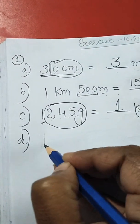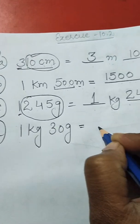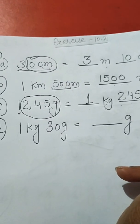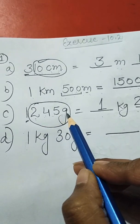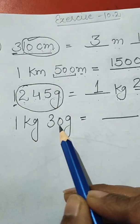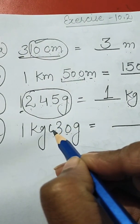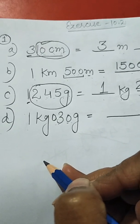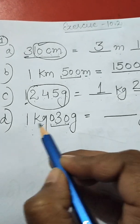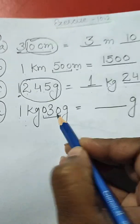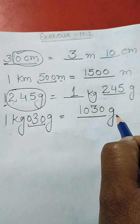Part D: 1 kilogram 30 grams is equal to dash grams. Here there are only two digits with gram, but we need three digits, so we put one zero to make it 030. Then we directly combine to write 1030 grams.